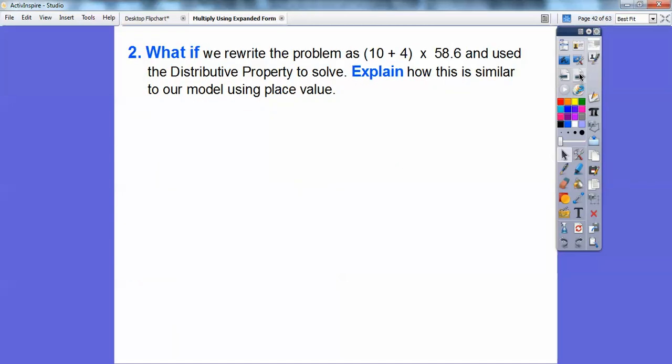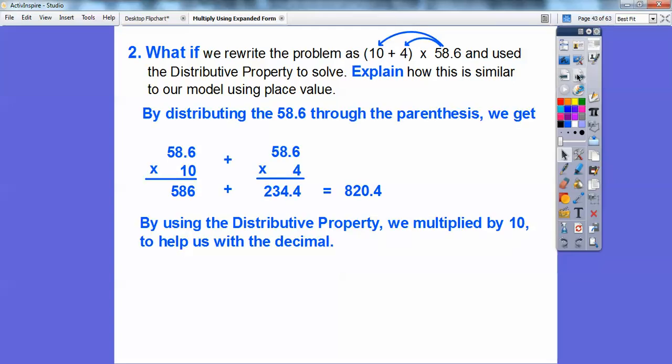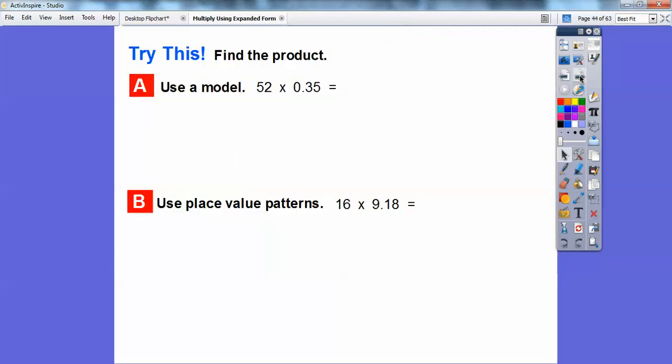What if we rewrite the problem as 10 plus 4 instead of that 14? 10 plus 4 times 58.6 and use the distributive property to solve. So the distributive property, I have arrows in the next click. So if I multiply these guys through, so here I have 58.6 times 10. Well, times 10 just moves that decimal over there. And then when I multiply 58.6 times 4, I get 234.4. And then when I add those guys, we get the same answer, 820.4. So by using the distributive property, we multiply it by 10. And that helped us with that decimal value right there.